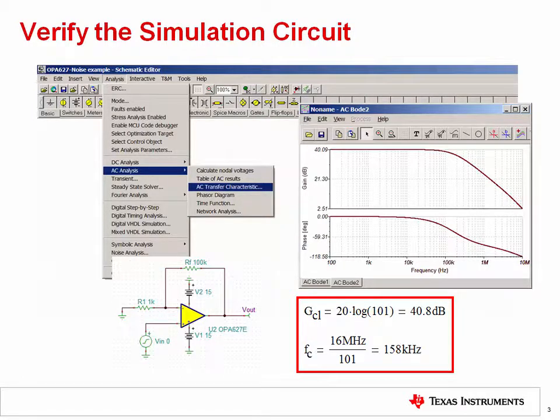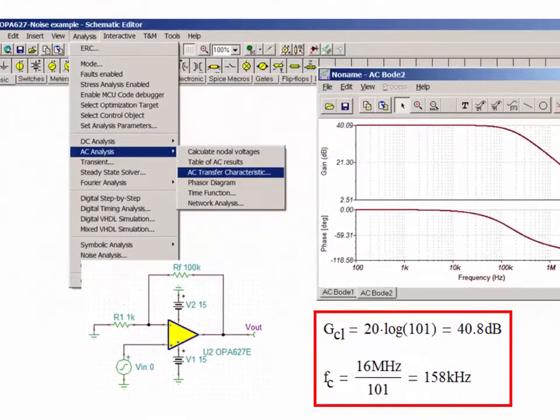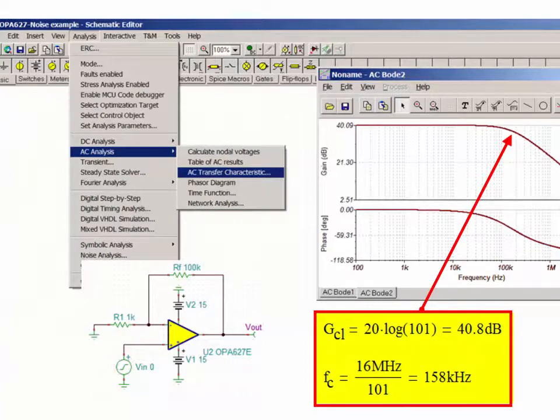Before doing a noise simulation, you need to verify that the circuit is connected properly. This is important because SPICE will not necessarily issue an error or warning if the circuit is miswired. Often, circuits that are miswired just give an incorrect noise simulation result, which can trick you into thinking that your system has really exceptional noise performance. The easiest way to be confident that your circuit is connected correctly is to run an AC transfer characteristic. Refer to the videos on bandwidth for a review of how to run an AC transfer characteristic simulation. A very simple hand calculation for gain and bandwidth can confirm that the simulation circuit is working as intended.